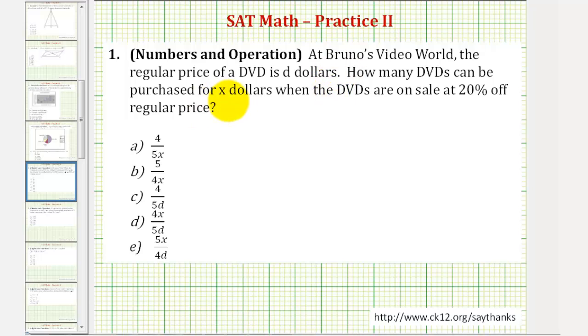So before we solve this problem, let's think of a simpler problem. For example, let's say we have a hundred dollars and the DVDs cost ten dollars each. If we let Q be equal to the quantity we can purchase,